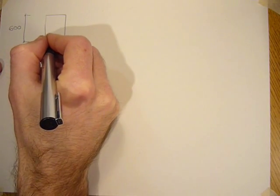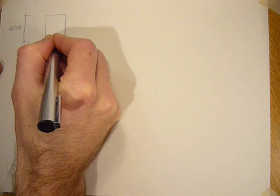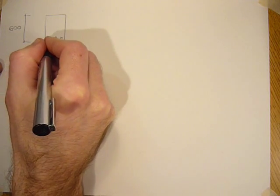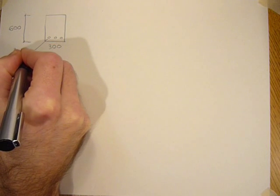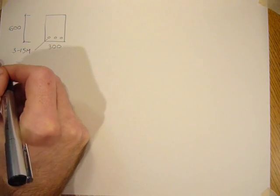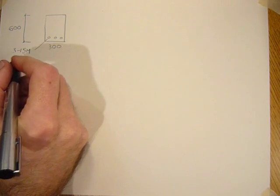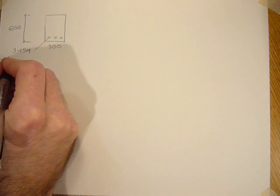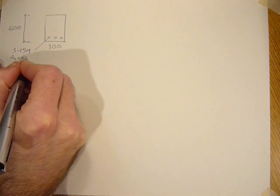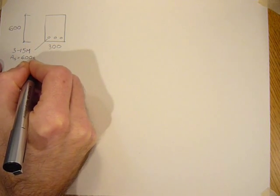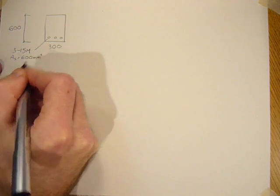The area of steel is 3 15M bars. A 15M bar is 200 mm squared, so 3 times 15M's area of steel is 600 mm squared.